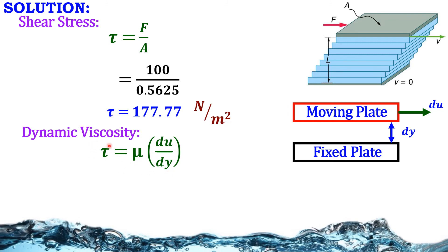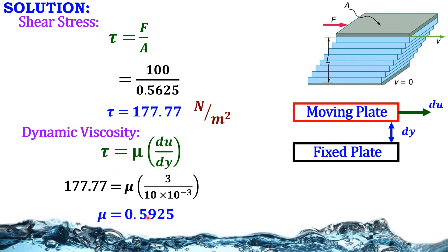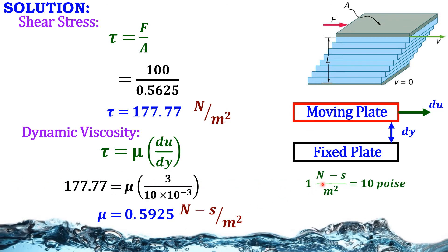We are going to calculate dynamic viscosity. We know tau = mu × (du/dy). We have already calculated tau. Substituting tau, du, and dy, we get mu = 0.5925 N·s/m². Since 1 N·s/m² = 10 poise, therefore mu = 5.925 poise.